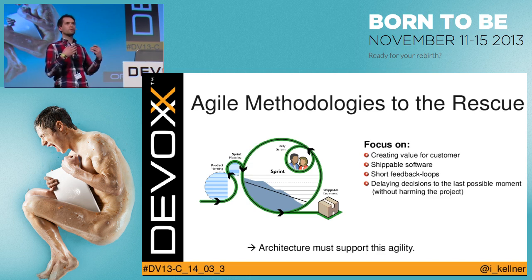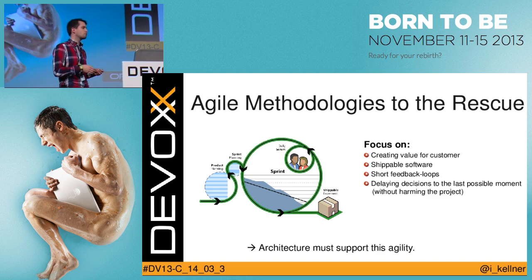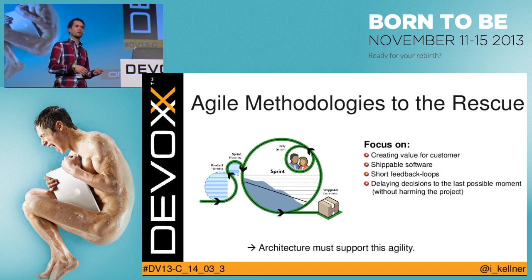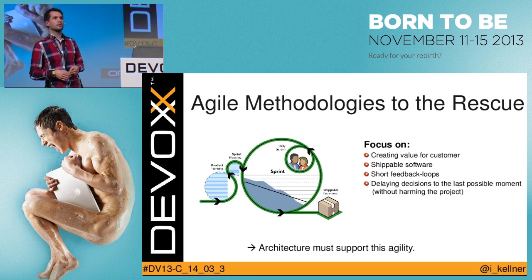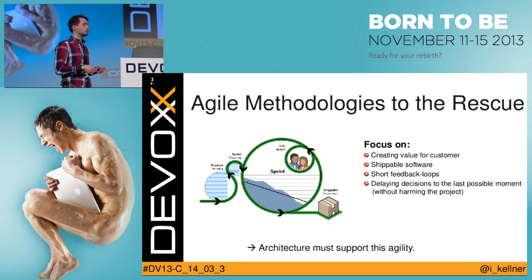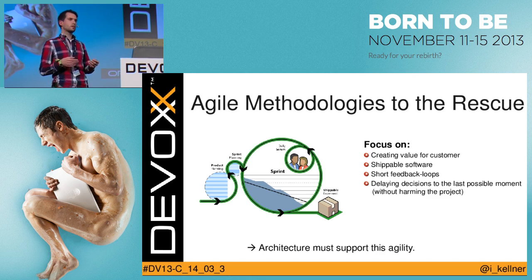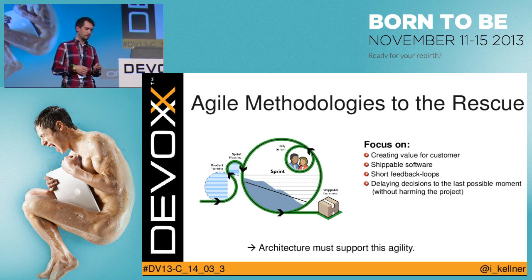If a new requirement comes in and the architecture is not prepared to fulfill it, I can't make use of the agile development process and ship after the next two-week release cycle. I really need to prepare my architecture to support this agility. So let's see what the biggest problems are that we face.